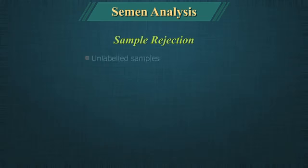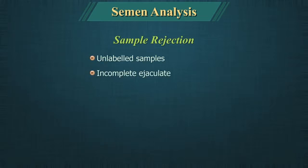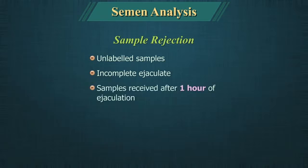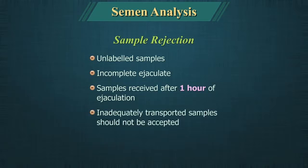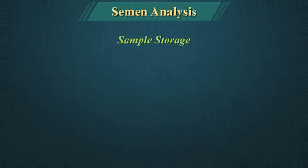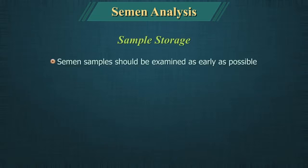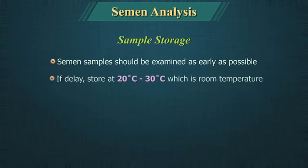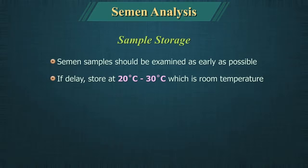Sample Rejection: Unlabeled samples, incomplete ejaculate, and samples received after 1 hour of ejaculation or inadequately transported samples should be rejected. Sample Storage: The semen sample should be examined as early as possible. If delay is likely, store at 20 to 30 degrees centigrade, which is room temperature.